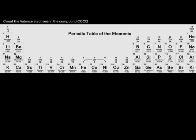To draw Lewis structures, our first task will be to count the valence electrons. The compound we have right now is COCl2. To begin counting the valence electrons, let's first locate carbon, oxygen, and chlorine on the periodic table.